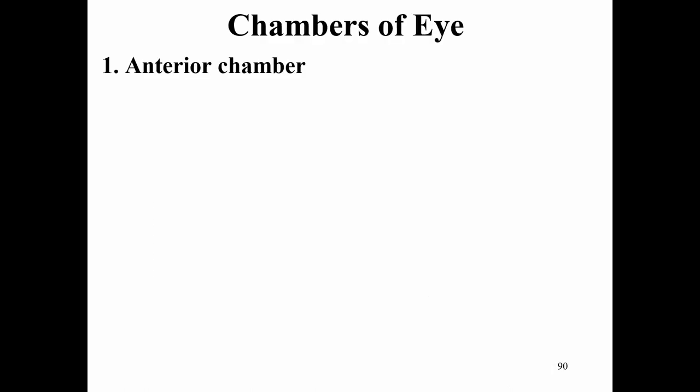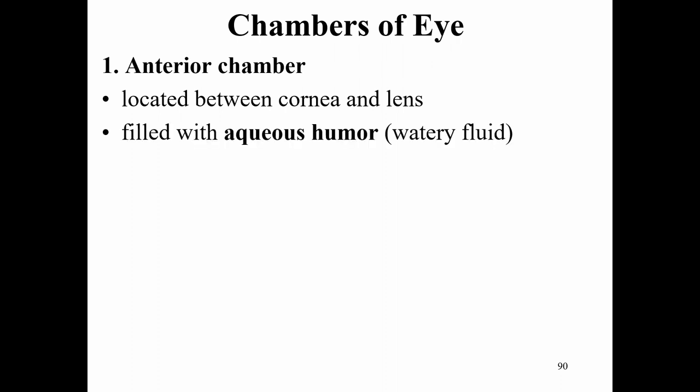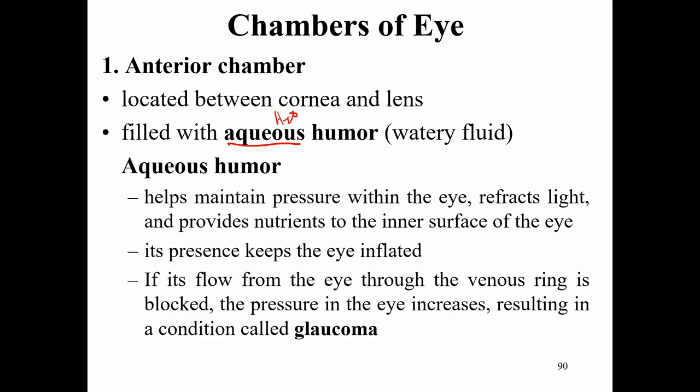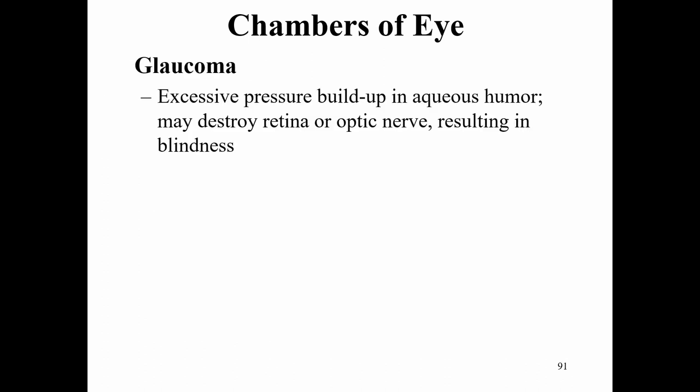The anterior chamber is located between the cornea and lens, filled with aqueous humor — a watery fluid. Aqueous humor helps maintain pressure within the eye, refracts light, and provides nutrients to the inner surface. If the flow of aqueous humor through the venous ring is blocked, pressure builds up resulting in glaucoma — excessive pressure in the aqueous humor that may destroy the retina or optic nerves, resulting in blindness.